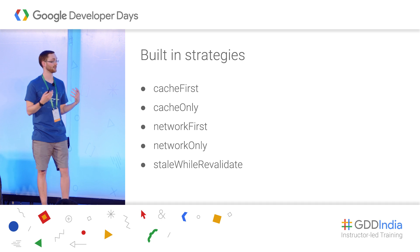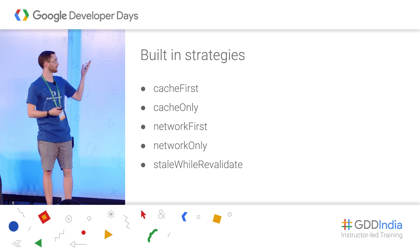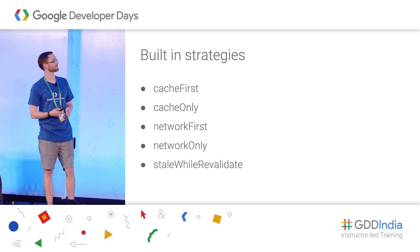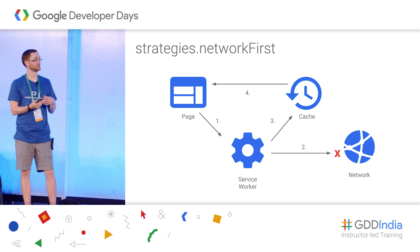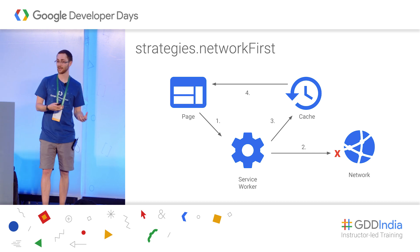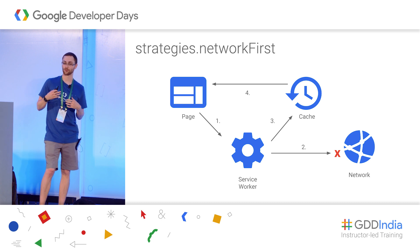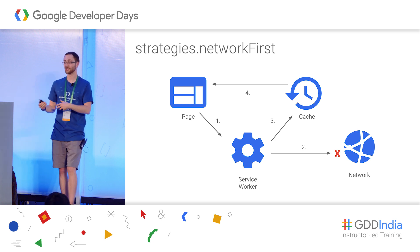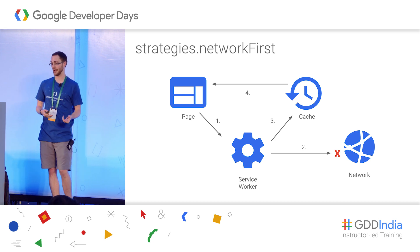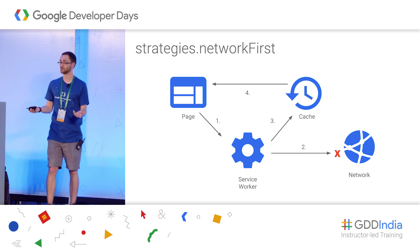Workbox has a lot of strategies built in. Let's look at the network-first strategy. At a high level, the service worker tries to get your resource from the network first, and if it can't, it grabs that resource from the cache. This makes sense for something like a news app where you want to serve the most up-to-date article, but if the user has no network connectivity, you can at least serve an older article that was previously cached — maybe with a toast notification saying they're viewing older content.